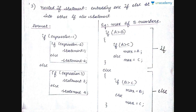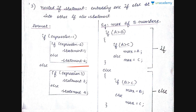Next is the nested if statement — embedding one if-else statement into another if-else statement. You have if expression one, and within its block there is another if-else. In the else block of the outer if, you again have another if-else. So under one if you have another if-else, and the else block contains yet another if-else.